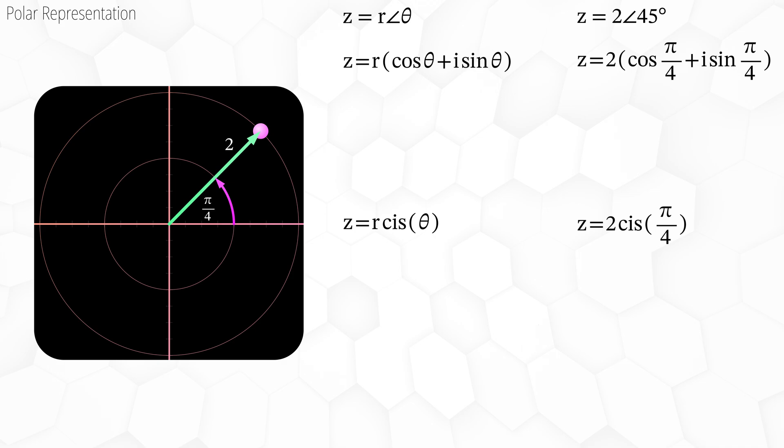Cis form is a shorthand way of writing the trigonometric form, z equals r cis theta, where cis stands for cos plus i sine.